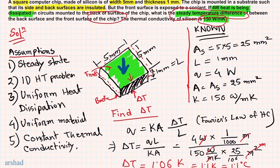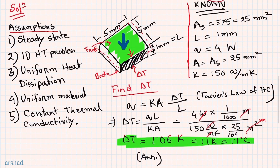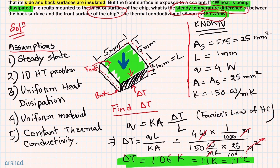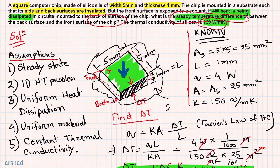This is our final answer. So if you operate this chip under steady state conditions, the temperature difference between the front and back surface would be 1.1 degrees Celsius if it dissipates 4 watts of heat to the circuit mounted below the back surface. That is the temperature difference between the front and back surface of the chip.